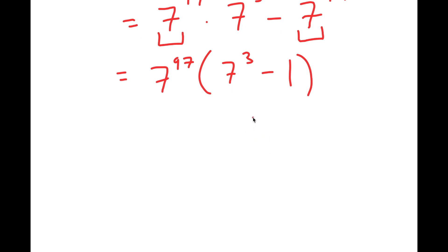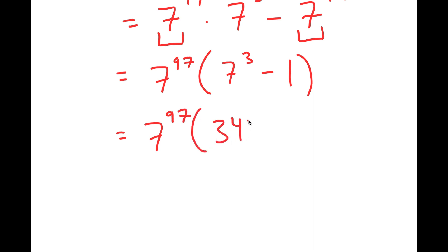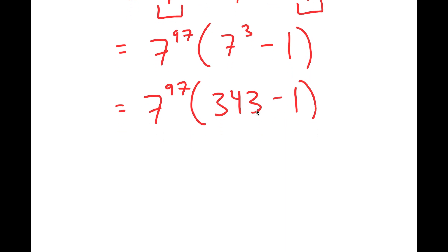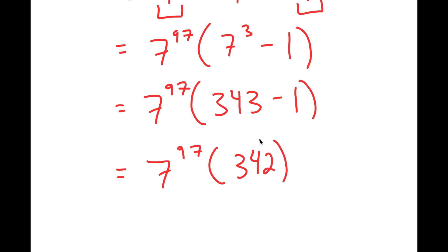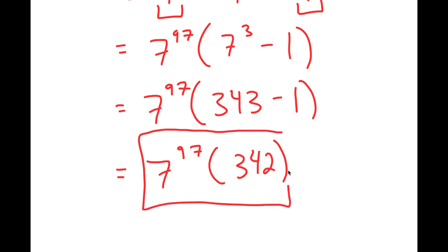And 7 to the power of 3 minus 1 — well, 7 to the power of 3 is 343. So I get 343 minus 1, which is equal to 342. So I get 7 to the power of 97 times 342. This is my answer in simplest form.